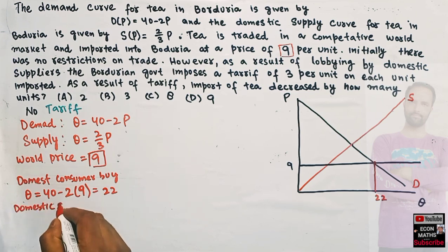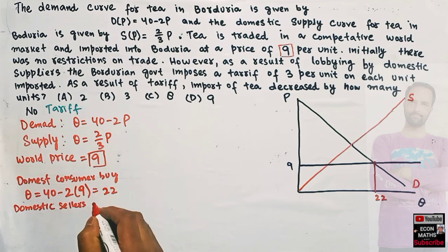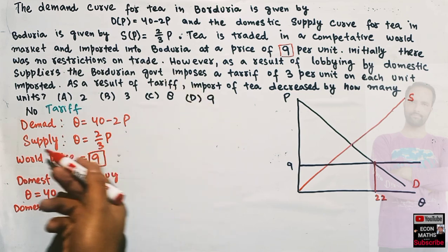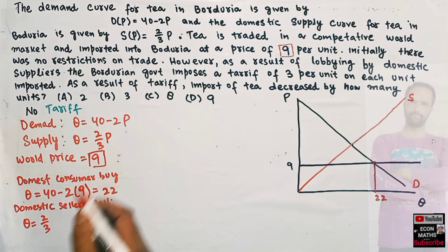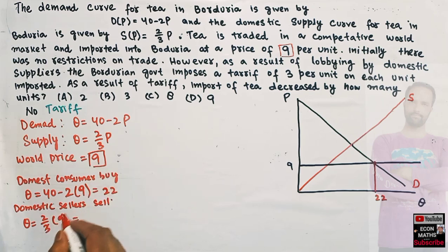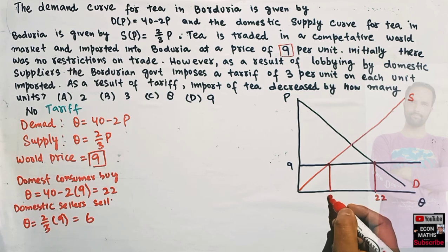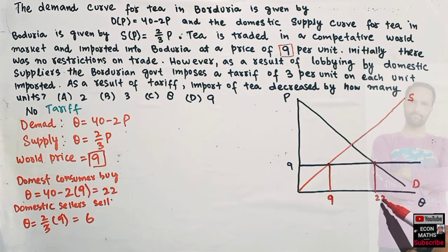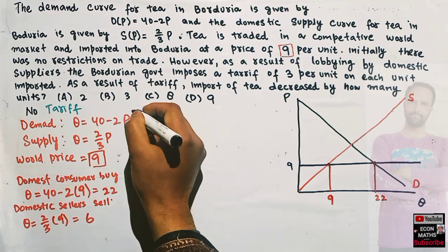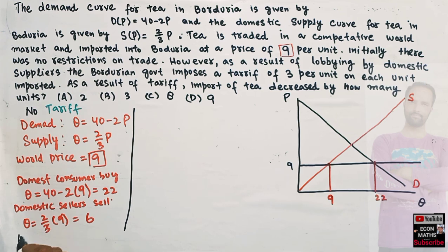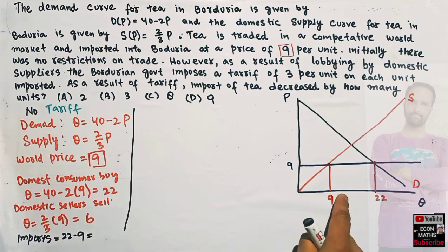Now, what will domestic sellers supply? We plug the world price into the supply function: Q = (2/3) times 9, which comes out to 6. So domestic suppliers will sell 6 units. Domestic consumers demand 22 units and domestic suppliers supply 6 units. The difference gives us the amount of imports: imports = 22 minus 6 = 16 units.